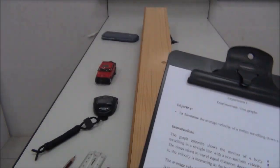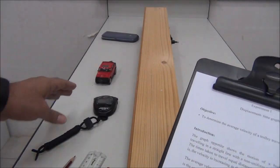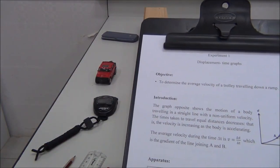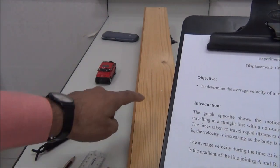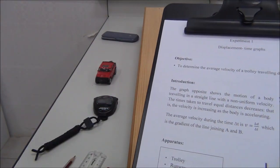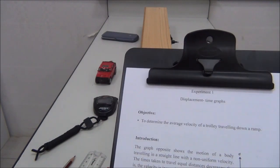The apparatus that we need includes a trolley, this is a trolley, and a runway. We also need two light gates, but we don't have light gates so we use a stopwatch.